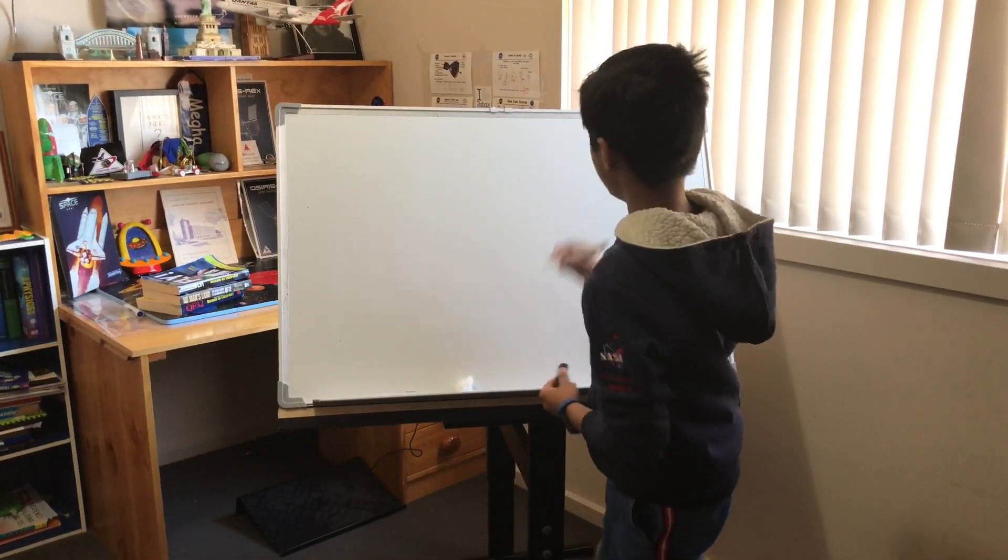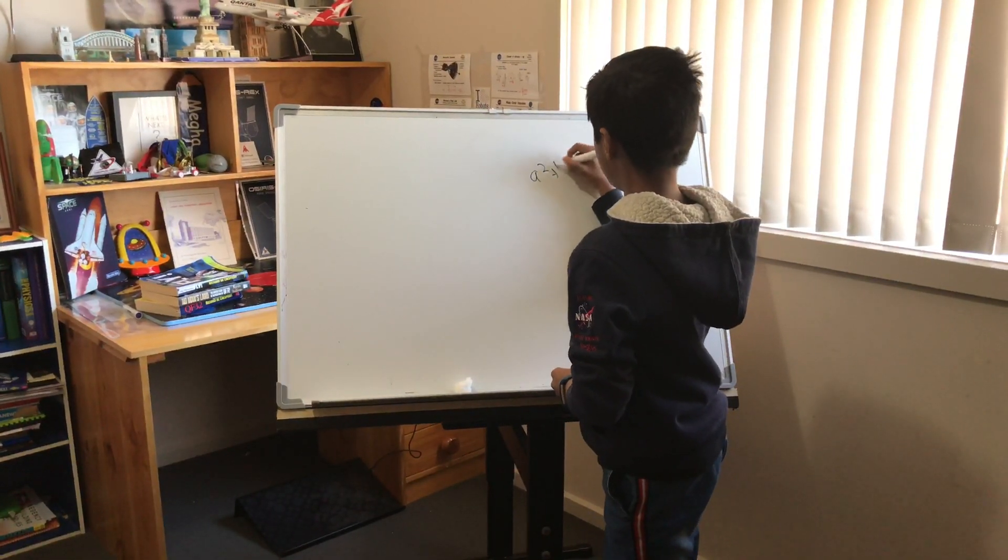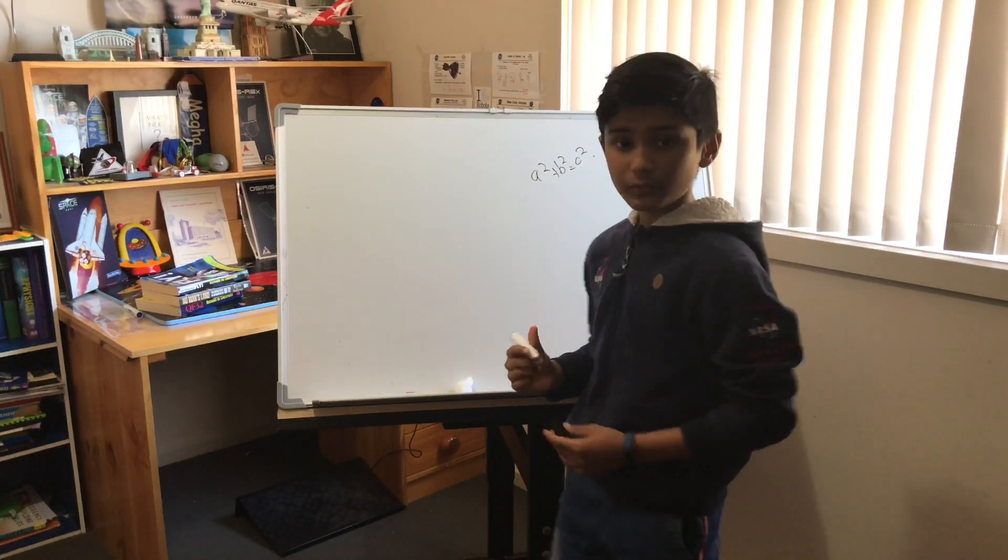You probably know the Pythagorean theorem. It's A squared plus B squared equals C squared.